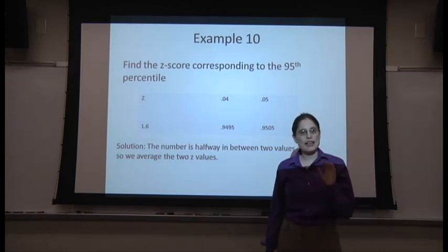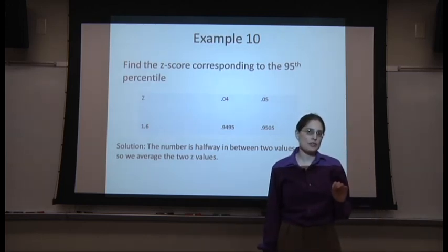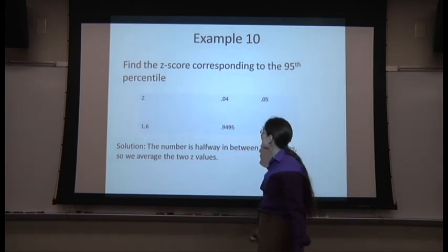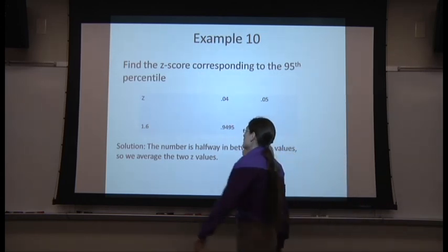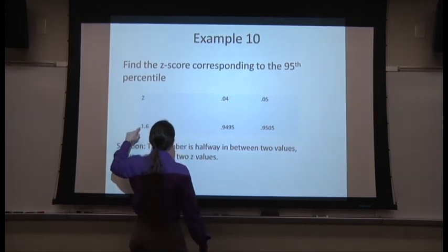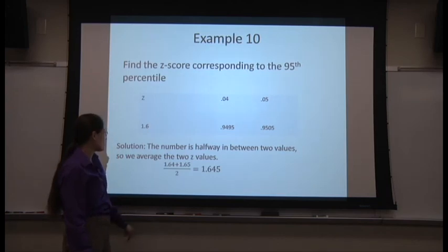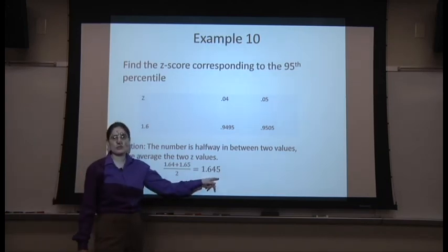If the number you want is halfway between two table values, average the two values. The z's, that is. 1.64 is close, 1.65 is close. Average them, 1.645.